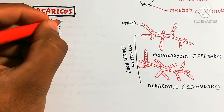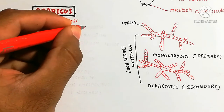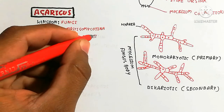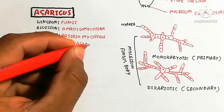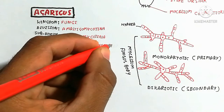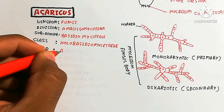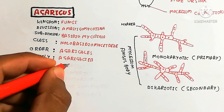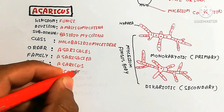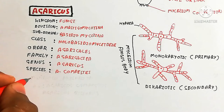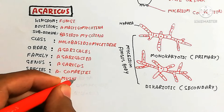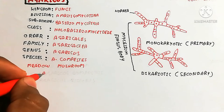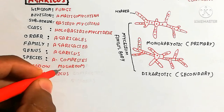The classification is as follows: Kingdom is Fungi, Division is Amastigomycotina, Subdivision is Basidiomycotina, Class is Holobasidiomycetes, Order is Agaricales, Family is Agaricaceae, Genus is Agaricus, and Species is Agaricus campestris, the meadow mushroom. Next, we will discuss the life cycle of Agaricus.